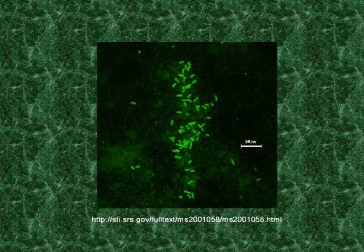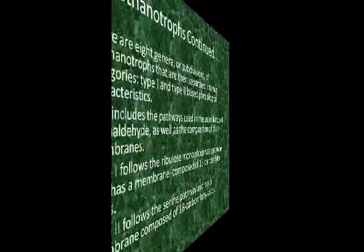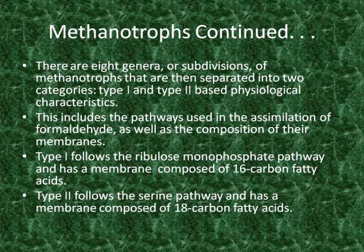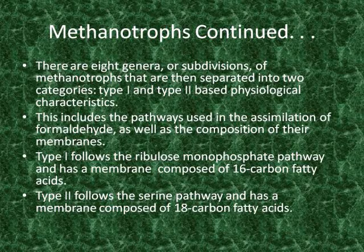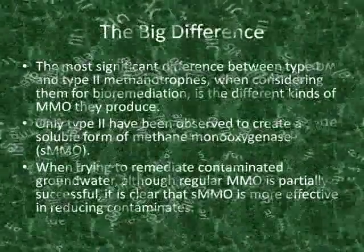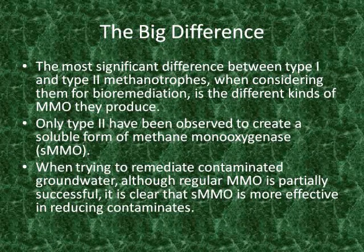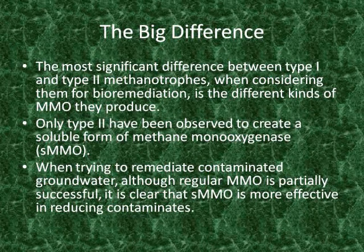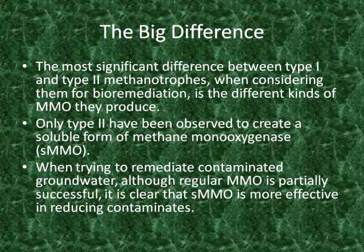This is a picture of methanotrophic bacteria glowing due to fluorescent antibodies. There are eight genera or subdivisions of methanotrophs divided into two categories: type 1 and type 2. Type 1 follows the ribulose monophosphate pathway to assimilate formaldehyde, and its membrane is composed of 16-carbon fatty acids. Type 2 follows the serine pathway for the assimilation of formaldehyde, and its membrane is composed of 18-carbon fatty acids. For the purposes of bioremediation, the most significant difference between type 1 and type 2 is the different MMO they produce. Only type 2 has been observed to produce a soluble form of methane monooxygenase, abbreviated SMMO. When trying to remediate contaminated groundwater, regular MMO works, but it's clear that SMMO is much more successful in reducing contamination.